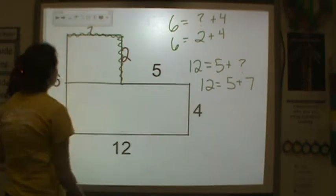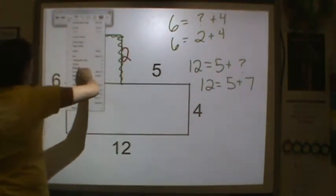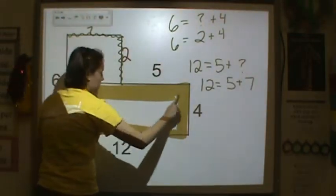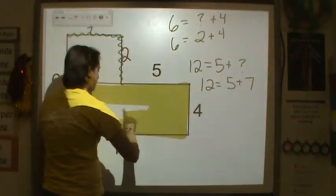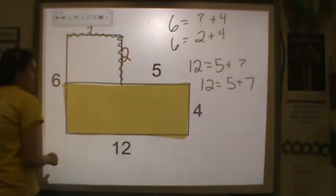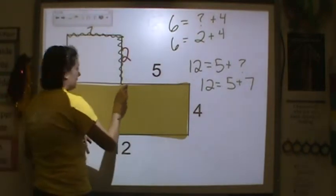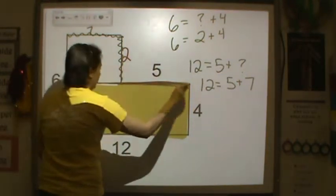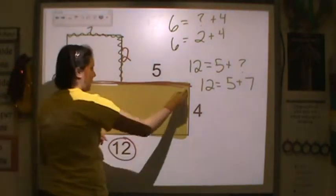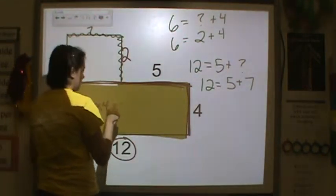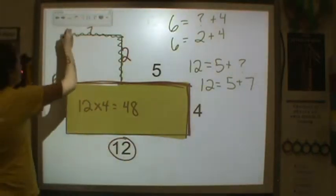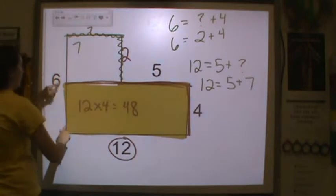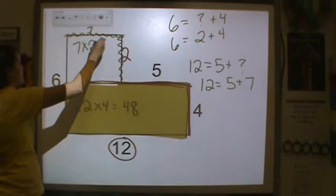The next step is to shade in one of the shapes. I'm going to shade the bottom one. If you have a colored pencil or highlighter, shade it in lightly. The length of the bottom rectangle is 12 and the width is 4, so 12 times 4 is equal to 48. For the top unshaded rectangle, the length is only from here to here, so it's 7, and the width is 2. 7 times 2 is equal to 14.